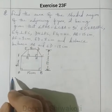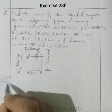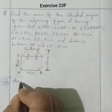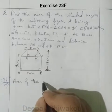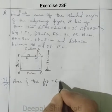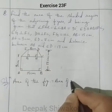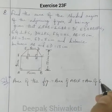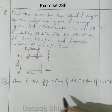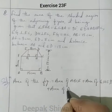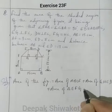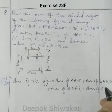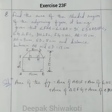The area of the figure equals the area of ABCF plus the area of GHED plus the area of triangle EGF plus the area of triangle DHC.